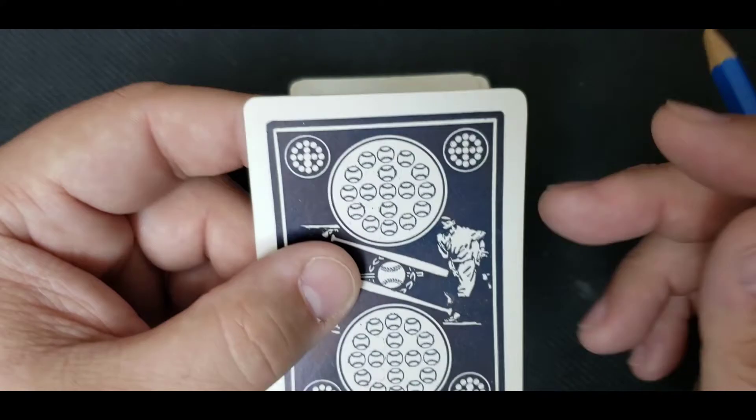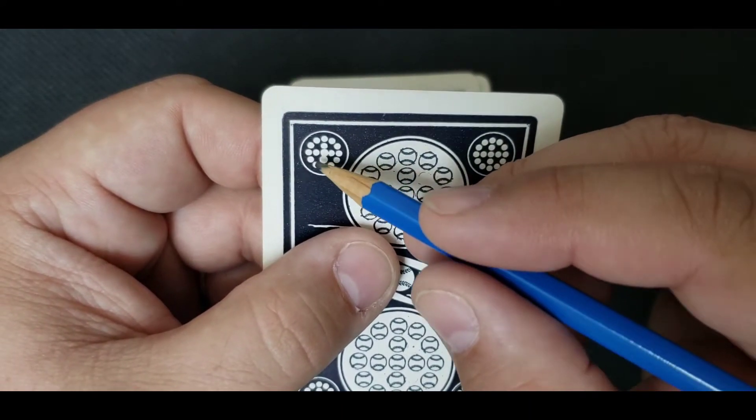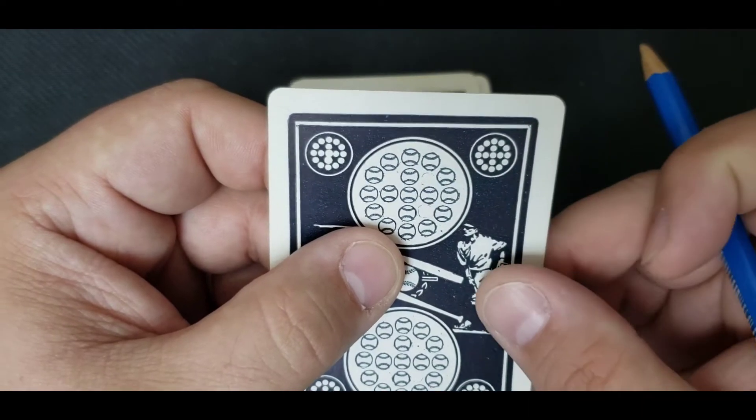And it doesn't matter if it's upside down, because clubs, hearts, spades, diamonds still reads the same.